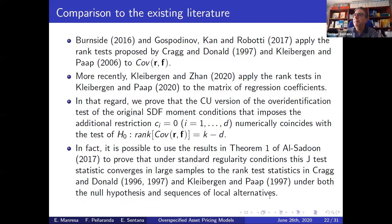Another approach that has become popular in the literature to deal with under-identification and over-specification is to use rank tests. Burnside and Gospodinov, Kan and Robotti, in their Econometrica paper, use various rank tests to check that the covariance matrix or matrix of regression coefficients have the necessary rank.